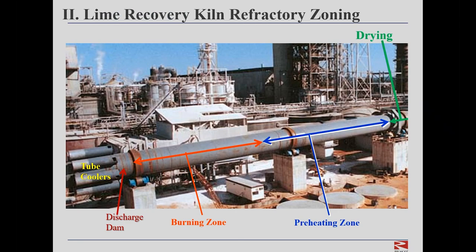Now let's take a more in-depth look at the lime kiln whose refractory is the purpose of our meeting today. Like practically all other rotary kilns, the lime recovery kiln utilizes different grades of refractories in four different zones to match the conditions inside. Starting at the low end is the discharge zone, which usually contains a dam. The burning zone — sometimes called the calcining zone — is where the work of calcination is done. The preheating zone is the longest zone, where the mud feed is gradually raised in temperature to prepare it for calcination. The feed end contains the drying zone, which normally has a heat exchanger known as the chain system.